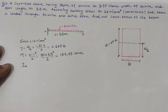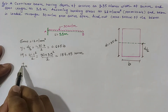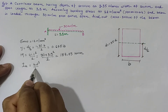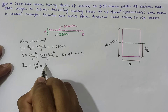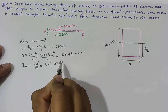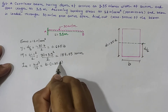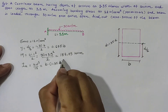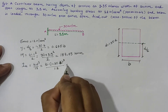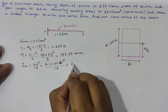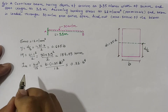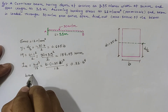The moment of inertia Ixx about the x-x axis for a rectangular section is bd cubed divided by 12. Substituting b as b and d as 1.35b, we get b times (1.35b) cubed divided by 12, which simplifies to 0.21 into b raised to the power 4.